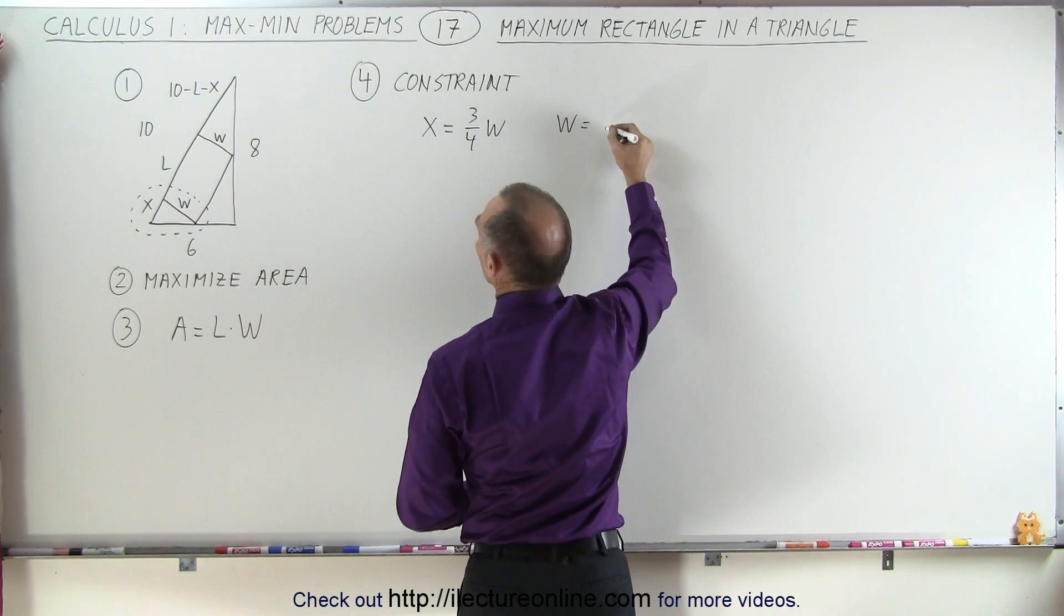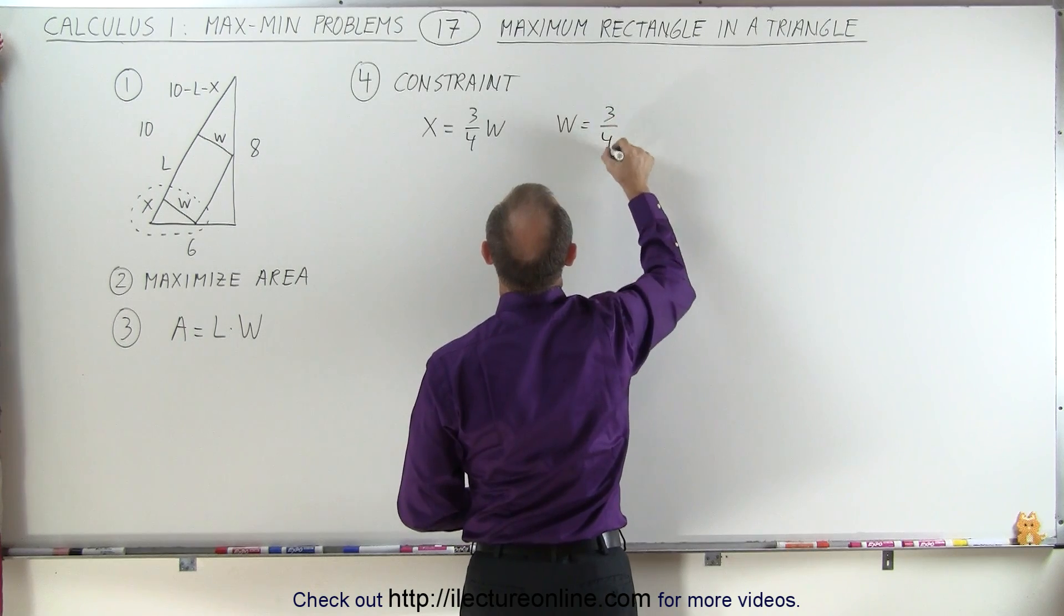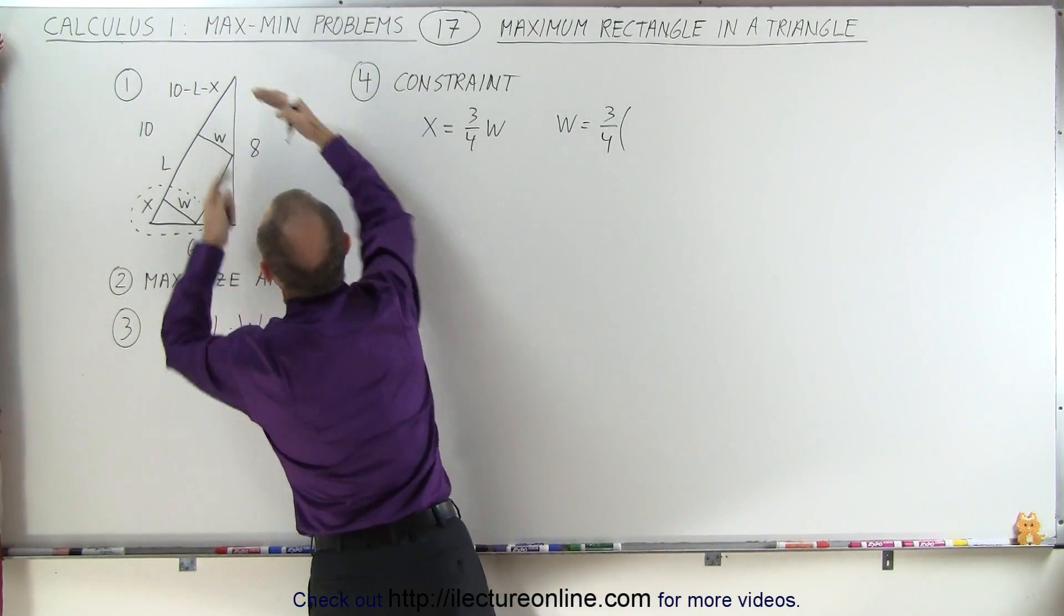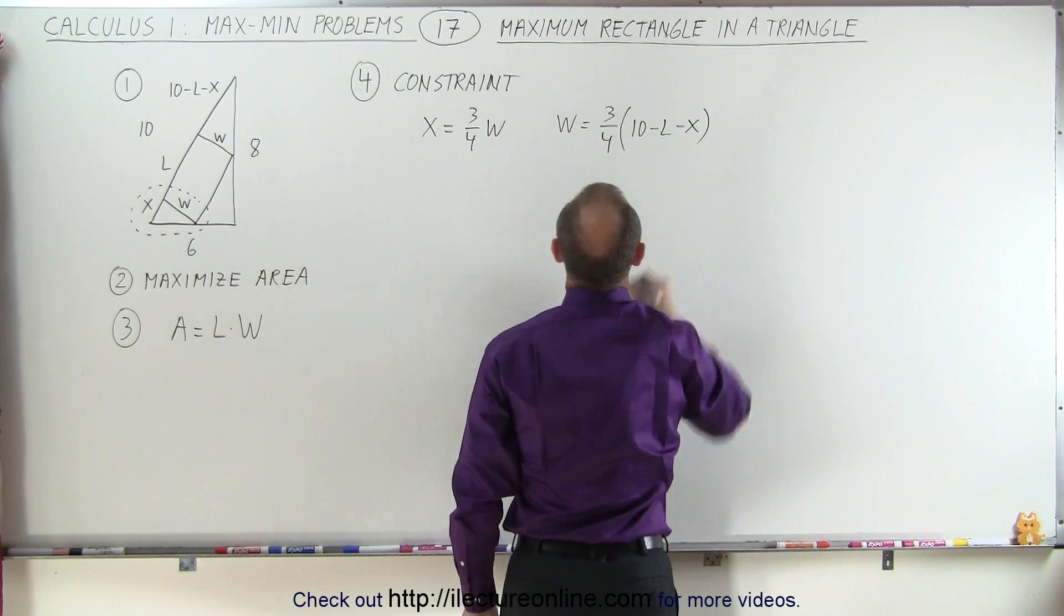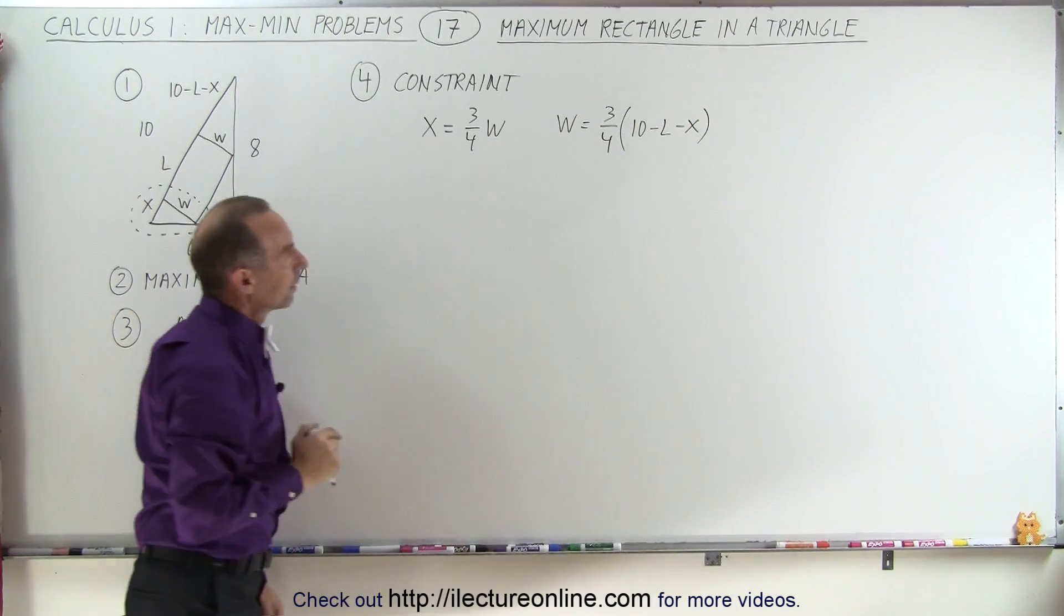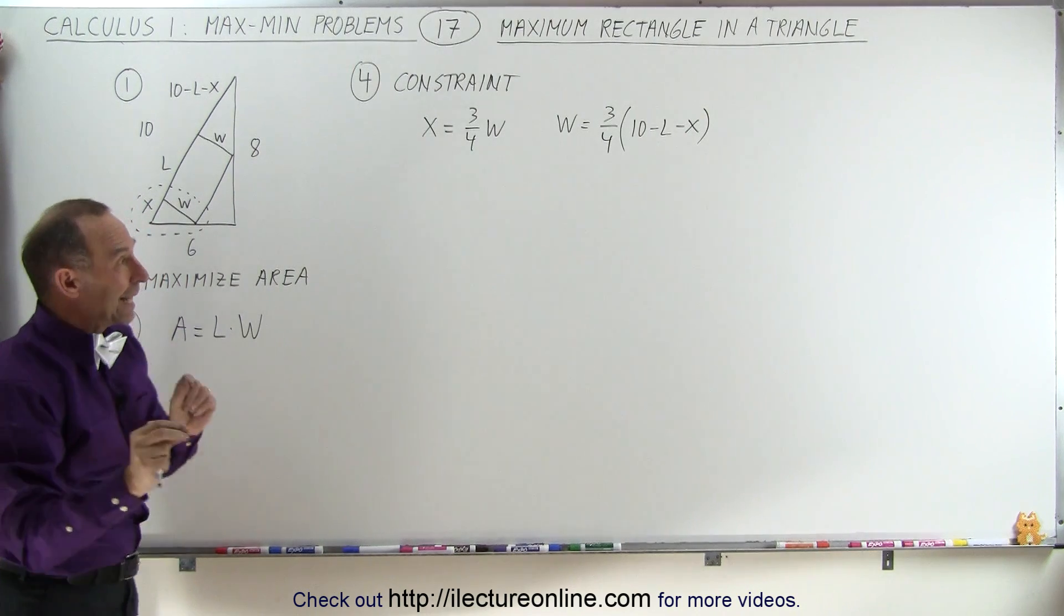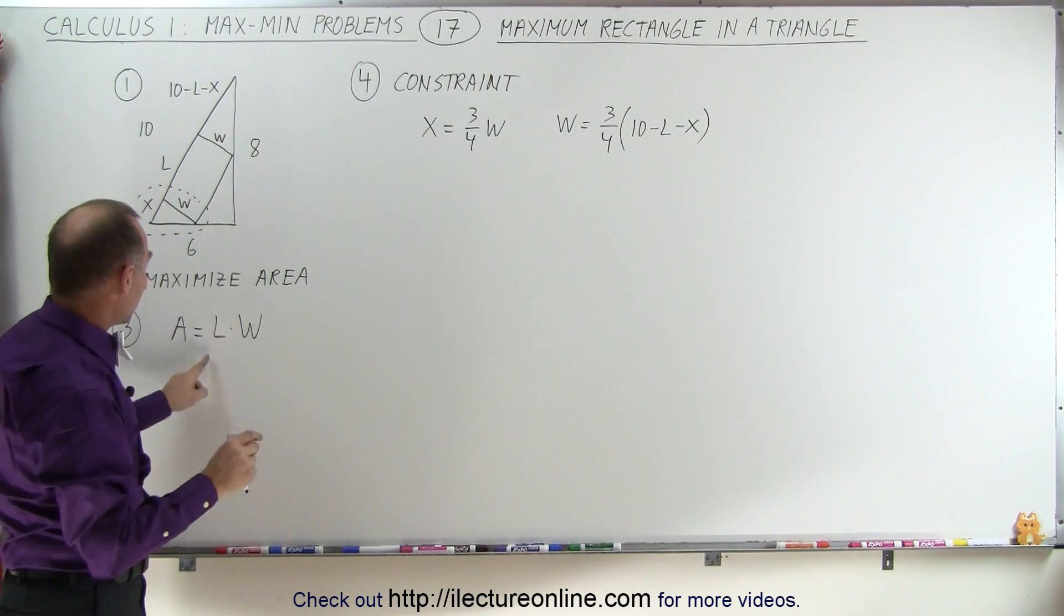W is equal to 3 quarters this distance right here, which is 10 minus L minus X. Remember, we're trying to relate W to L, so we can limit one of the variables, which means we need to get rid of an X here.